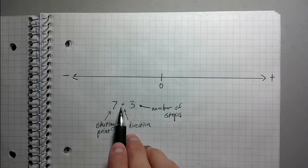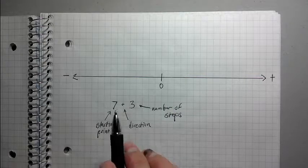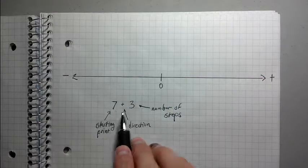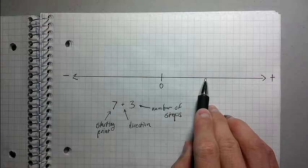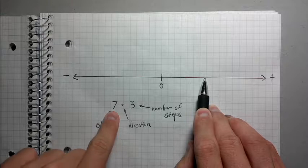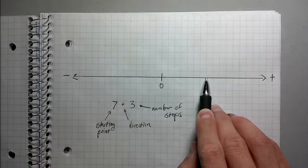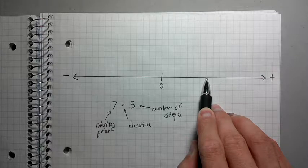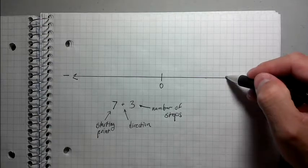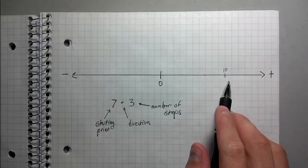So let's use this on 7 plus 3 here. So we're starting at 7. Where's 7? It's like right here. So the way we want to read this is starting at 7, we go to the right three steps. So starting at 7, going to the right one, two, three steps. So that's where we end up. This is 10. All right. No surprise there. Everybody knows 7 plus 3 is 10.